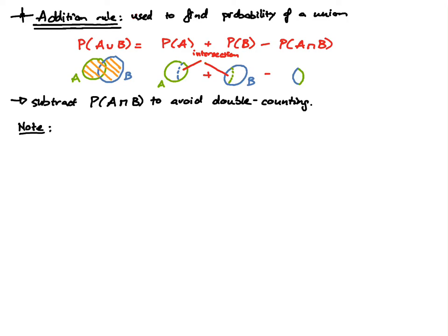To make it easy to understand: whenever you see the union — A union B — that typically means in English 'A or B.' Whenever you see the intersection — A intersection B — that means in English 'A and B.'